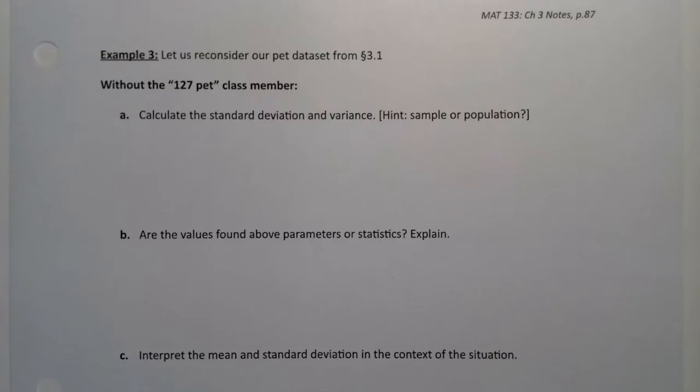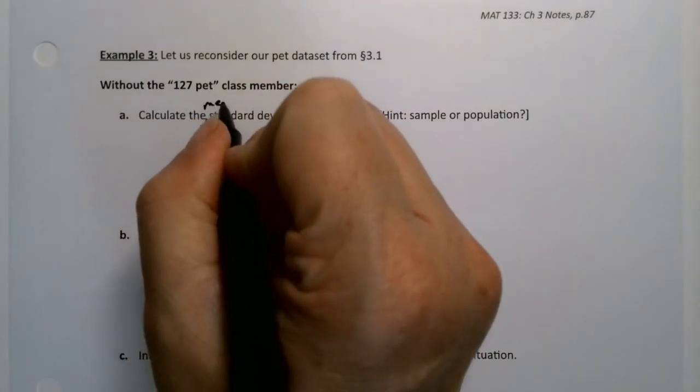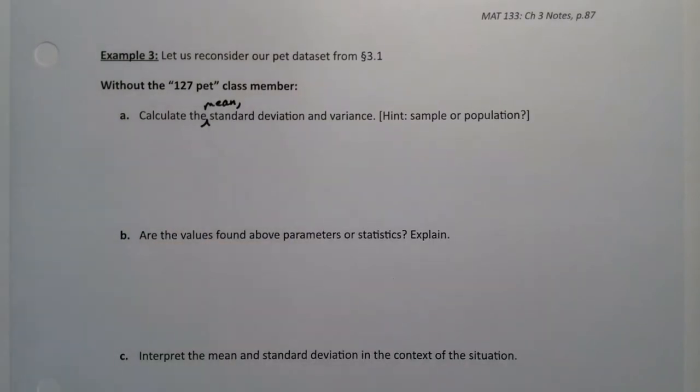Now that we know how to find standard deviation and variance with a computer or calculator, let's practice doing it again, but with our pet data from section 3.1. I'll add to this and say we're also going to find the mean as well.